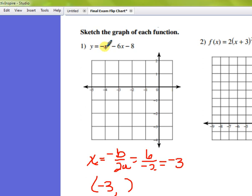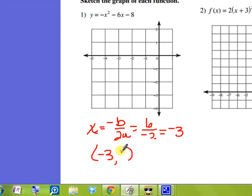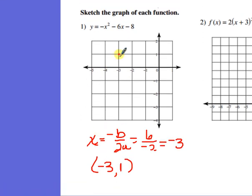So it'll be negative 9 minus 6 times negative 3, which is actually going to convert to a plus 18. That's negative 9 plus 18, which is 9. And then 9 minus 8 equals 1. So that vertex is at negative 3, 1.